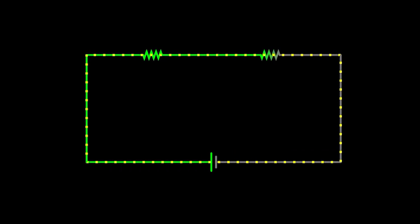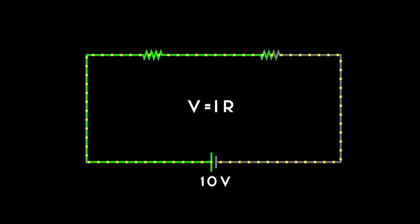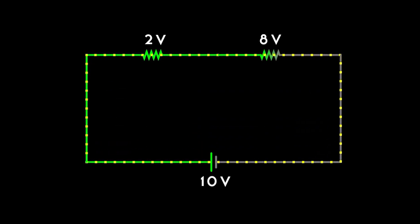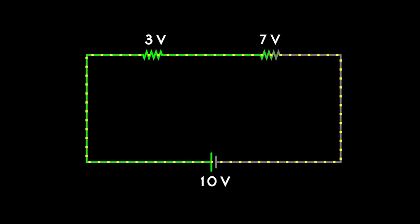Third is how voltage drops across series resistors. Consider two different resistors in series connected across 10 volts. There will be a current flow, and due to it a voltage drop - say 2 volts drops across the first resistor, then the remaining 8 volts drops across the second one since the total voltage is 10 volts. Similarly, if 3 volts drops here, then the voltage drop across the second one will be 7 volts.